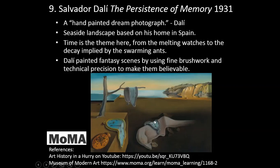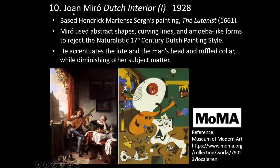Number ten — Joan Miró, Dutch Interior 1, 1928. This is based on Hendrik Martensz Sorgh's painting The Lutenist from 1661. Miró used abstract shapes, curving lines, and amoeba-like forms to reject the naturalist 17th century Dutch painting style. He accentuates the lute and the man's head in ruffled color while diminishing other subject matter. Can you see the similarities and differences between the two works?